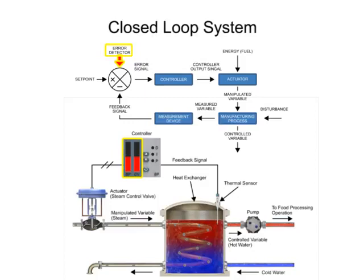Error detector compares the set point to the feedback signal and produces an output proportional to the difference between them. Error signal is the output of the error detector. If the feedback signal and set point are equal, the error signal is zero.